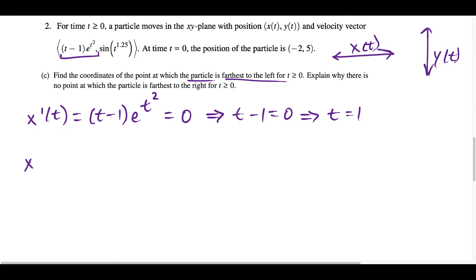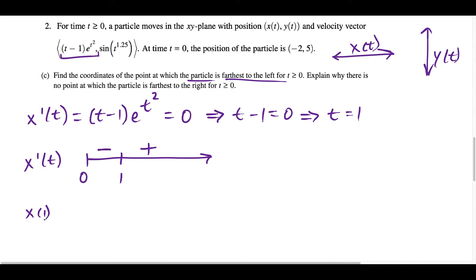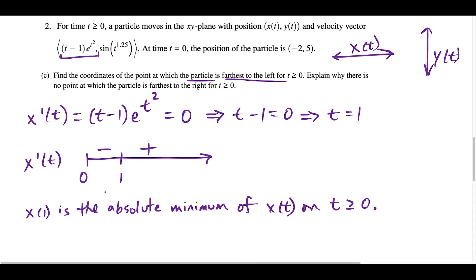We make a sign chart for x prime of t on the interval t greater than or equal to zero. At a test value of one half, t minus 1 is negative one half, times something always positive, so x prime is negative on the first interval. For t greater than one, x prime is positive. This means x of 1 is a local minimum — and since it's the only critical point on this interval, it's also the absolute minimum, confirming the particle is farthest left at t equals 1.